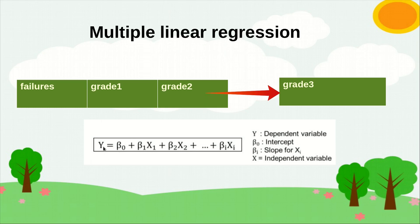Multiple linear regression is when we have multiple independent variables to predict the dependent variable. Mathematically it looks like: y equals beta 0 plus beta 1 times x1 plus beta 2 times x2, up to beta i, where i is the number of independent variables. For example, beta 1 could be the coefficient for failures, beta 2 for grade 1, beta 3 for grade 2. Each coefficient tells you how much importance to give that variable — a larger beta means one unit change in that variable has greater impact on the output.